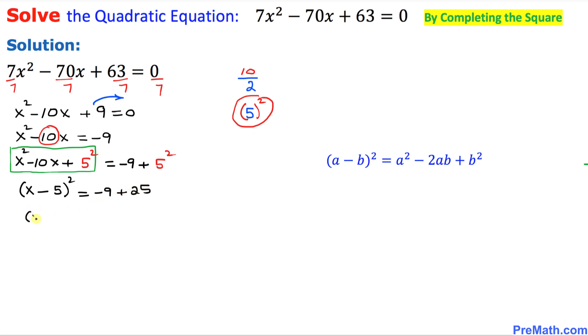So we simply got x minus 5 squared turns out to be equal to 16. Now we want to remove this square.